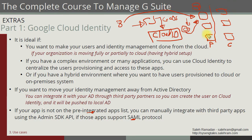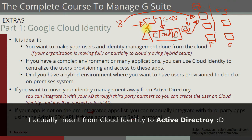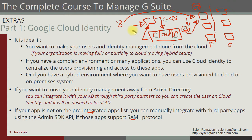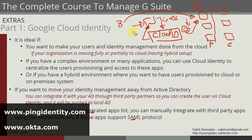If these applications support SAML integration or are on the pre-integrated applications list, this is straightforward. You can also do the reverse — sync users from Cloud Identity to G Suite or to allow users to access local Microsoft applications — using partner tools that provide the means to do this.